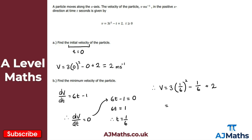Putting this into the calculator: 3 times (1/6)² minus 1/6 plus 2. To a sensible degree of accuracy, v equals 1.92 meters per second. That's the minimum velocity for part b. We don't need to investigate whether it's a minimum or maximum because the velocity is a u-shaped quadratic, so there's only a minimum.